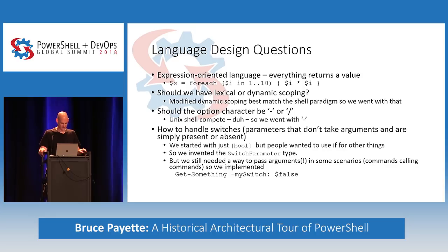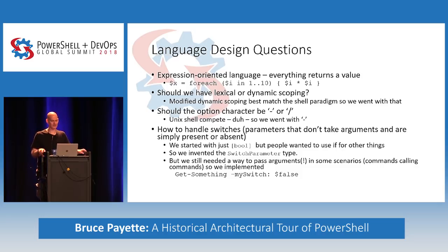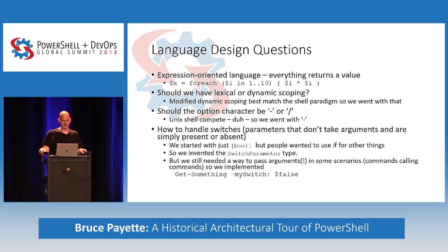We had discussions with architects on the CLR team who warned us about dynamic parameters. It has largely worked, though. One thing we did in V2 with modules is introduce module scope, so you don't leak into functions in the module. Should the option character be dash or slash? That was easy — we're competing against the Unix shell, not command.exe, so we go with the dash.